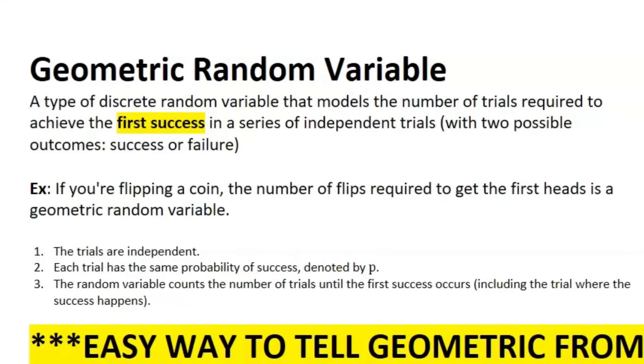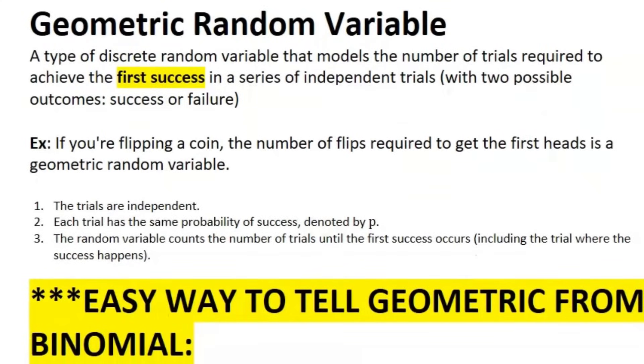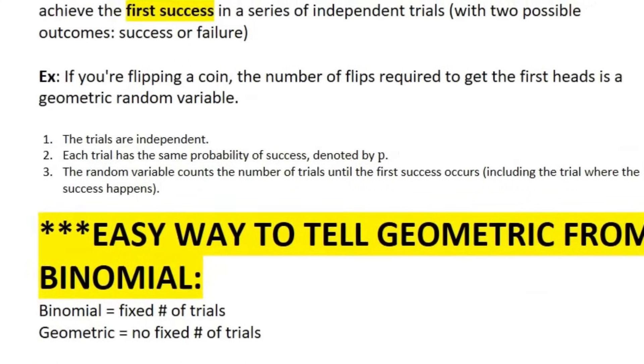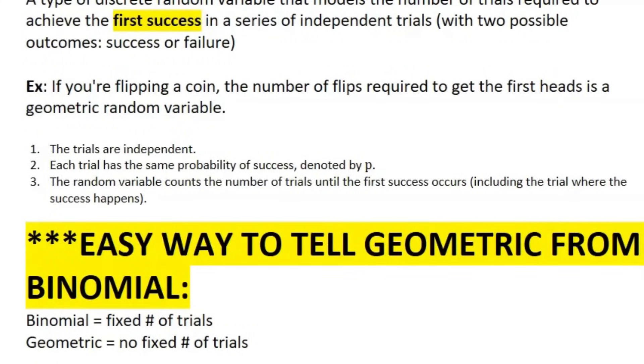Now I'm going to move on to geometric random variables. So these are a type of discrete random variable that models the number of trials required to achieve the first success. To achieve the first success in a series of independent trials with two possible outcomes, success or failure. So very similar to the binomial random variables. Example of this is you're flipping a coin and you're trying to see the number of flips required to get the first heads. That is the example of a geometric random variable. Here are a couple criteria. Trials have to be independent. Each trial has to have the same probability of success, denoted by P. And the random variable counts the number of trials until the first success occurs, like we talked about before in the definition.